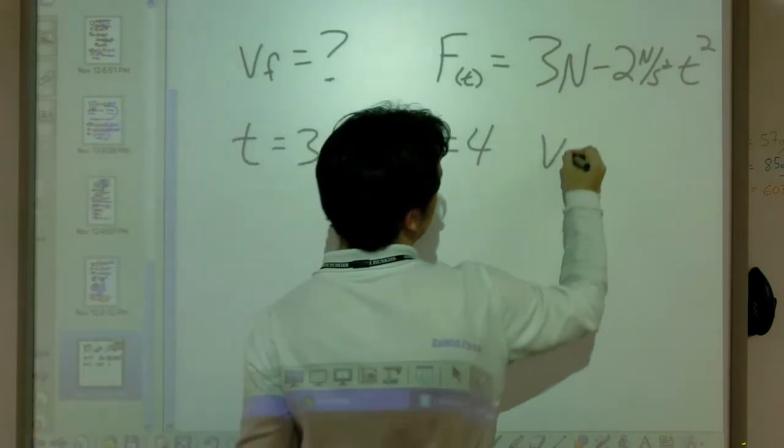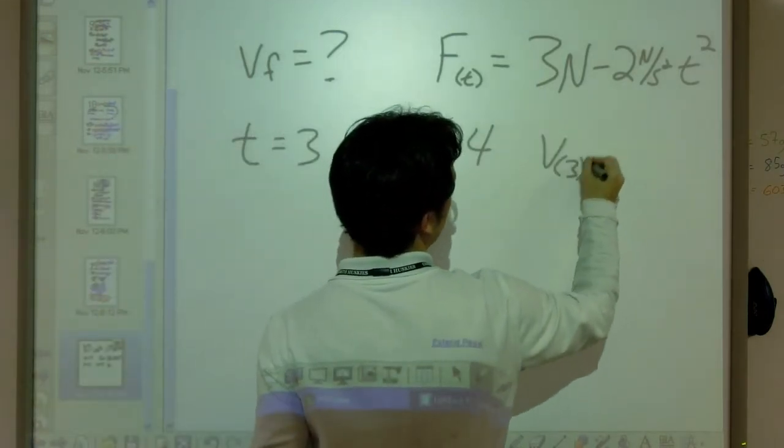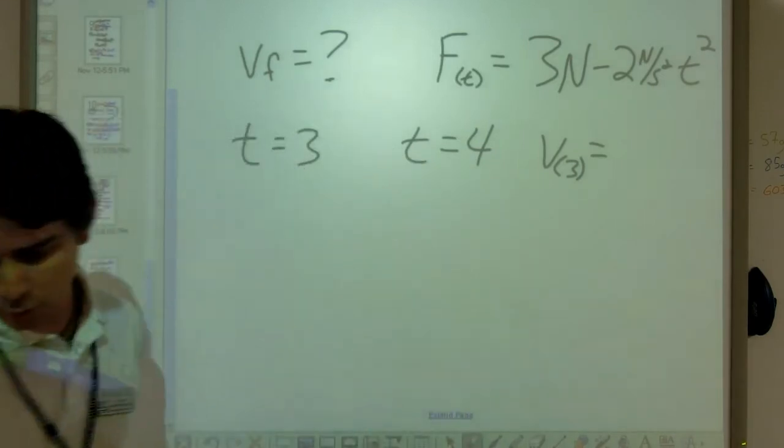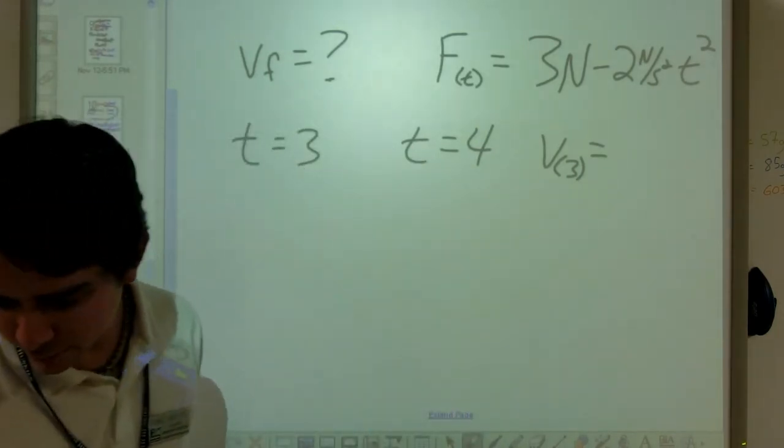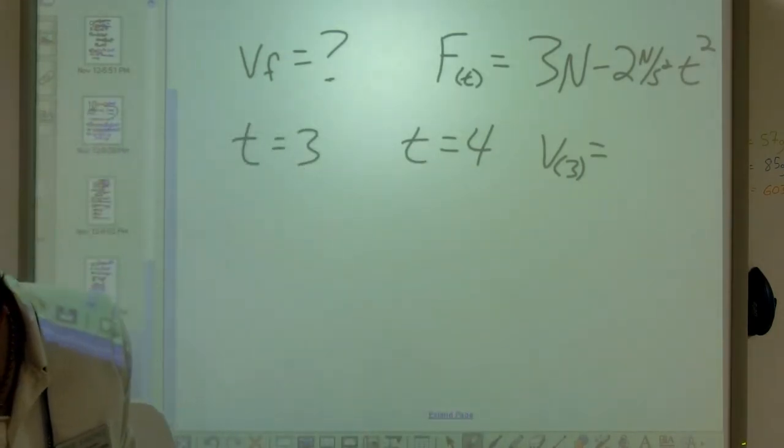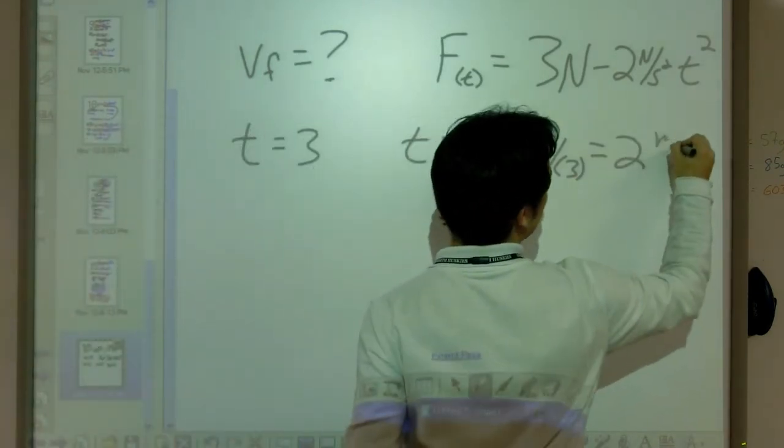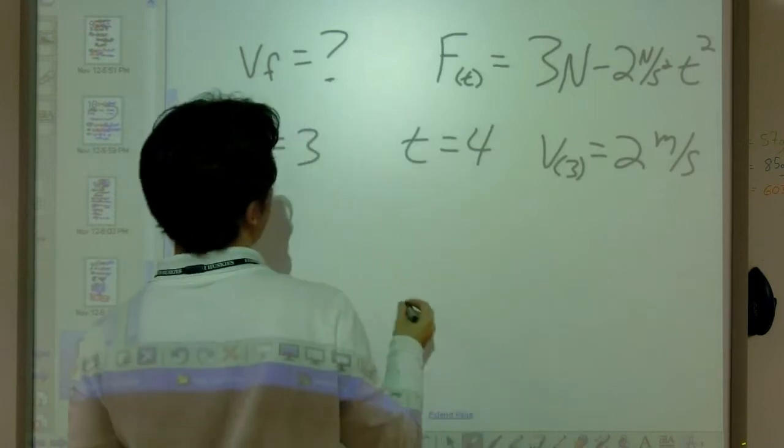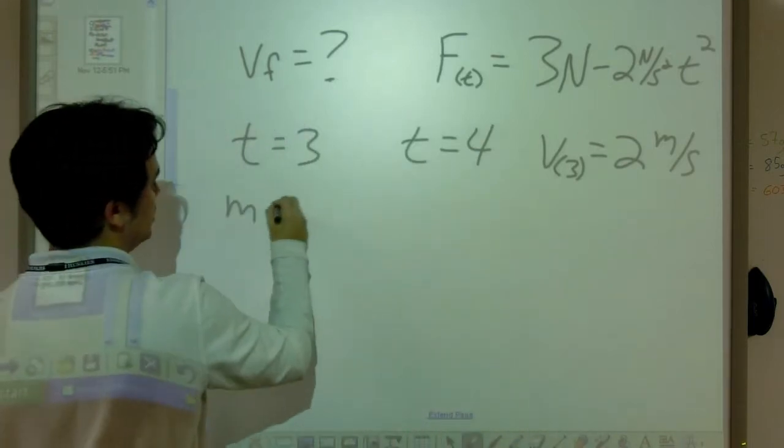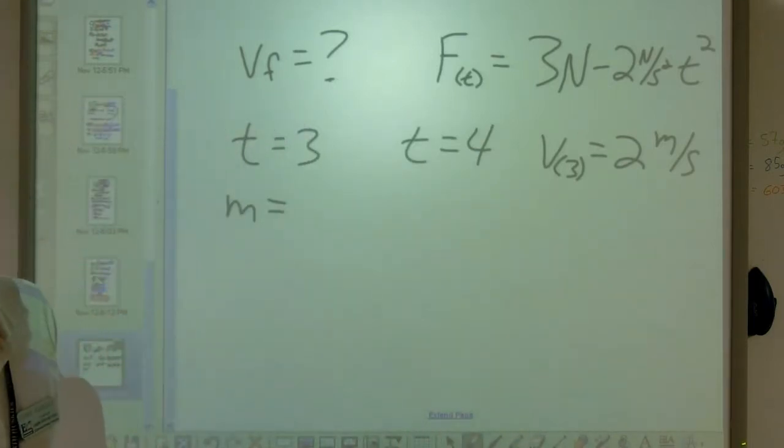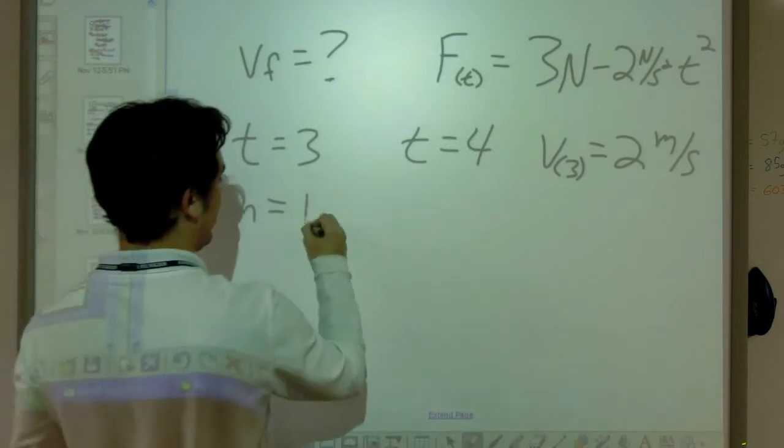And I will tell you that the velocity at time equals three is equal to positive two meters per second.